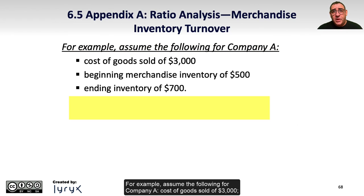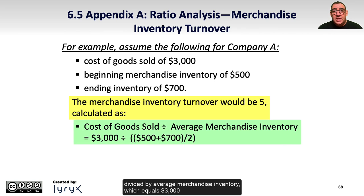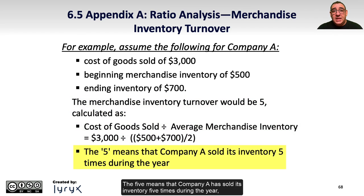For example, assume the following for Company A: cost of goods sold of $3,000, beginning merchandise inventory of $500, and ending inventory of $700. The merchandise inventory turnover would be 5, calculated as cost of goods sold divided by average merchandise inventory, which equals $3,000 divided by ($500 plus $700) divided by two. This means that Company A has sold its inventory five times during the year.